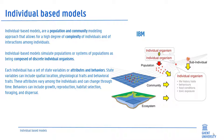Individual-based models simulate populations or systems of populations as being composed of discrete individual organisms. Each individual has a set of state variables or attributes and behaviors. State variables can include spatial location, physiological traits, state, and behavioral traits. These attributes vary among individuals and can change through time. Behaviors can include growth, reproduction, habitat selection, and movement.